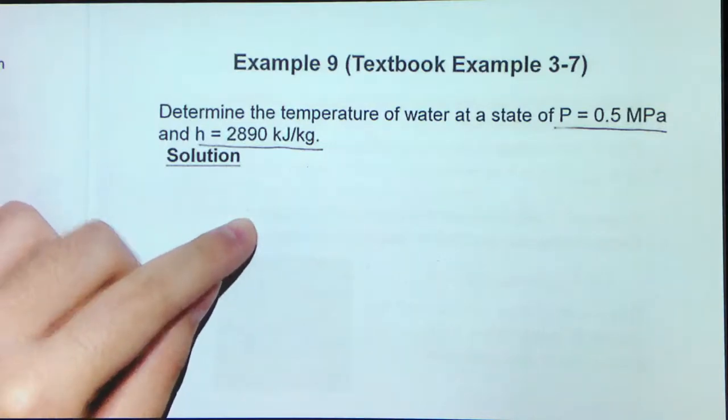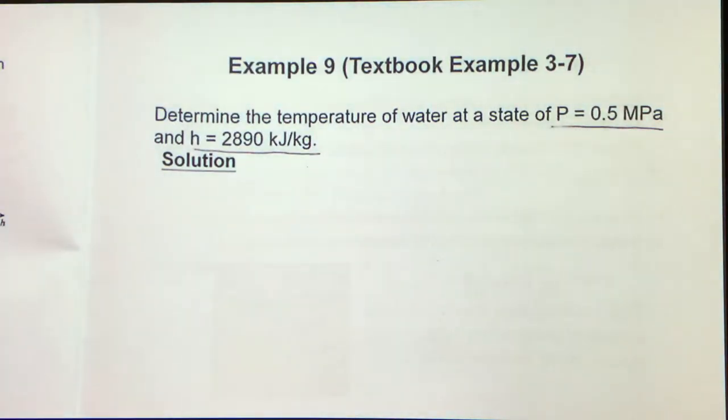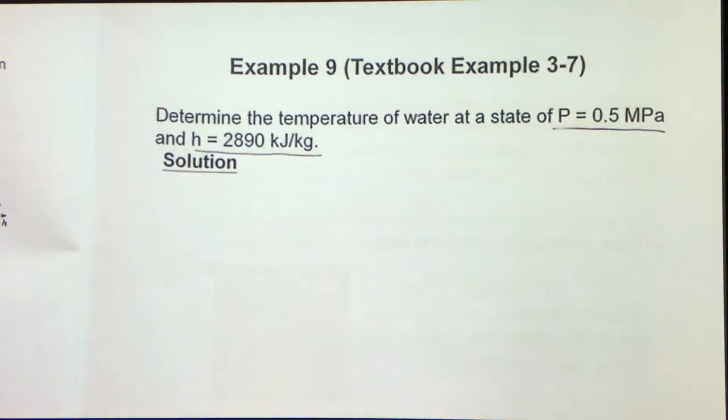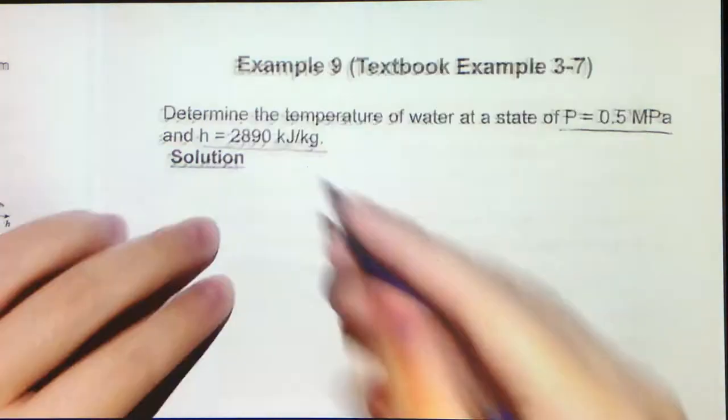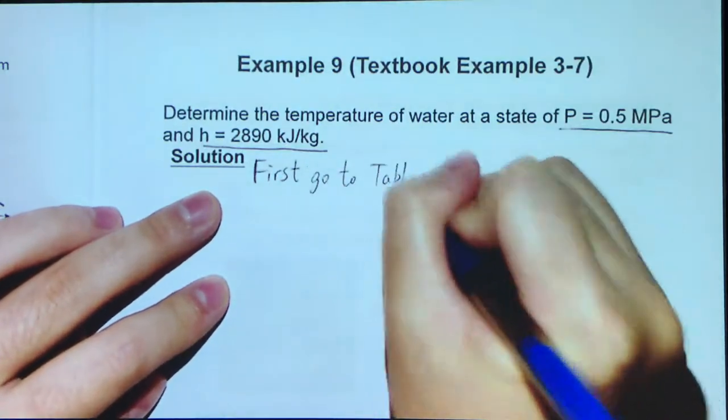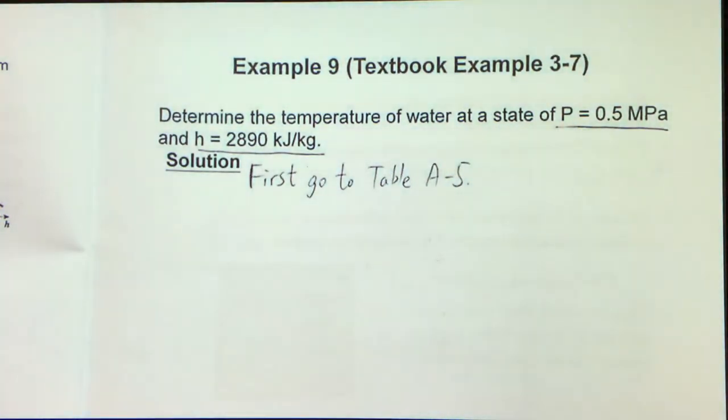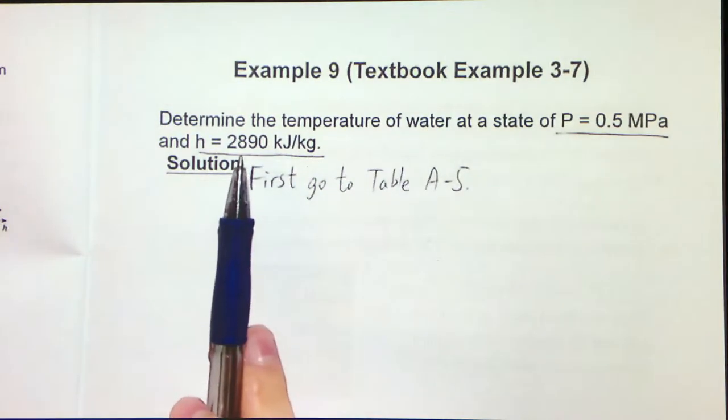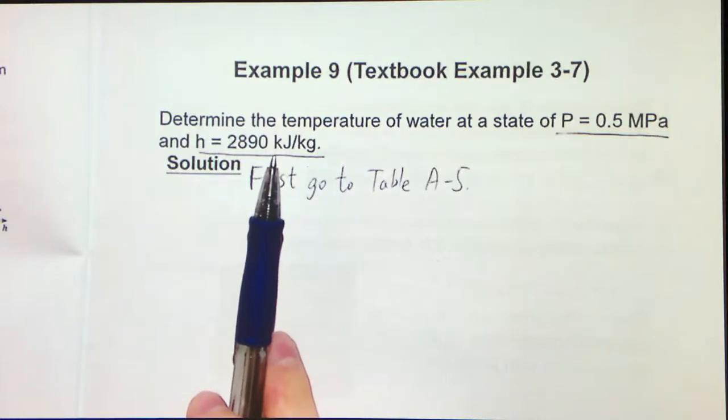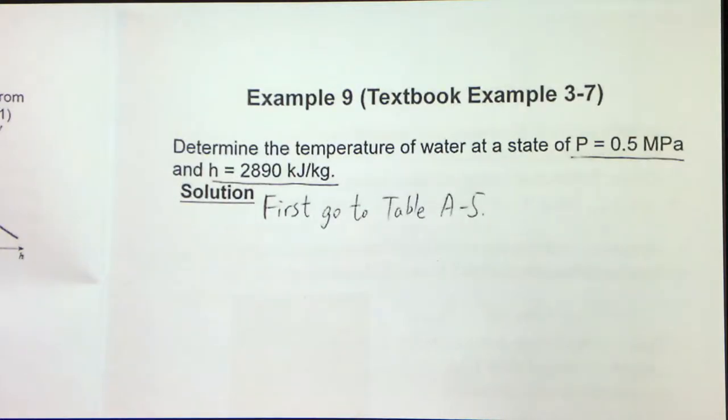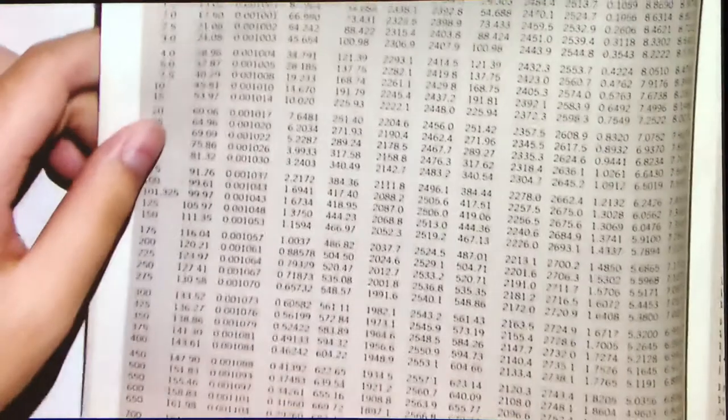First of all, let me illustrate how we can check this. We will go to the saturation table. Because it's water and we have given the pressure, let's go to table A5. The reason is that we are given the h here, but we don't know whether this h lies within the values for the saturated state or not. So we need to know whether this h lies within it.